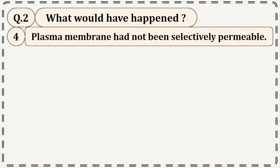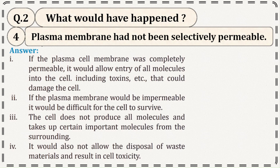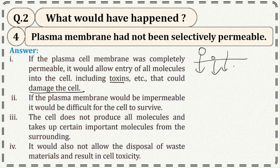What if plasma membrane had not been selectively permeable? If the plasma membrane was completely permeable, it would allow entry of all molecules into the cell including toxins that could damage the cell. Large molecules, small molecules, toxins, and pathogens would all enter easily, causing disease.